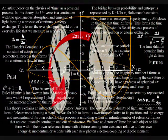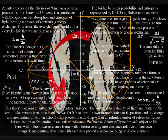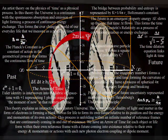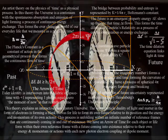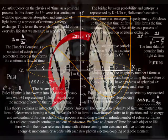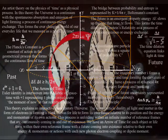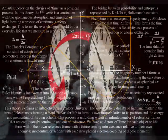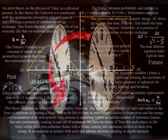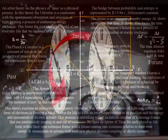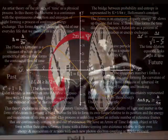In this theory, the mathematics of quantum mechanics represents the physics of time as a physical process, with classical physics representing processes over a period of time, as in Newton's differential equations. The universe is a continuum with atoms representing standing waves over a period of time.